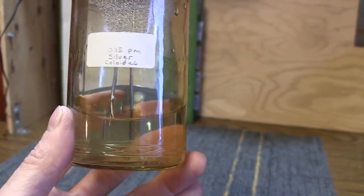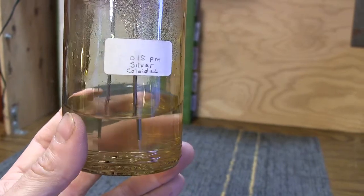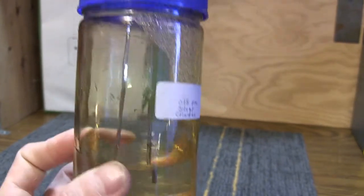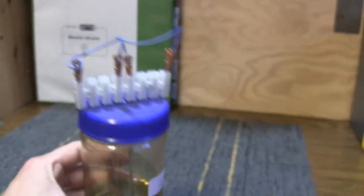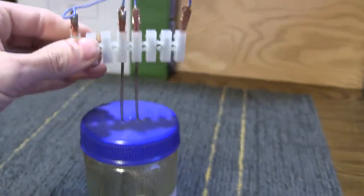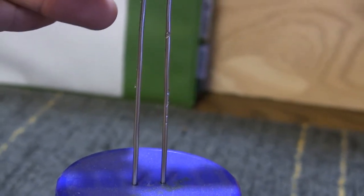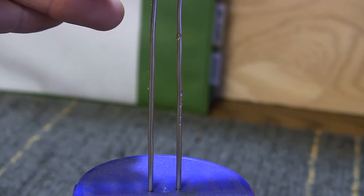So if you're making colloidal silver I just wanted to pass along this tip. Clean your electrodes and store the electrodes in the silver water. What's interesting is the electrodes have remained crystal clear. There is not any corrosion whatsoever on these electrodes.